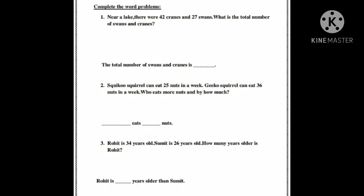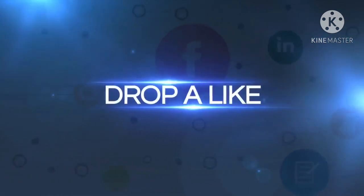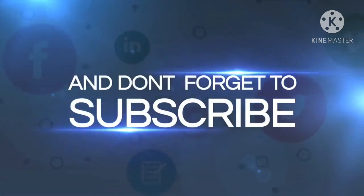This is a worksheet related to word problems. First: near a lake there are 42 cranes and 27 swans — find the total number. Second: one squirrel eats 25 nuts a week and another eats 36 — who eats more and by how much? Third: Rohit is 34 years old and Sumit is 26 — Rohit is 8 years older than Sumit.